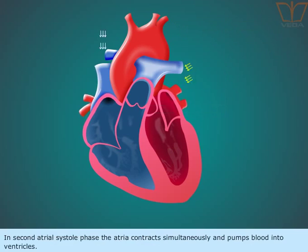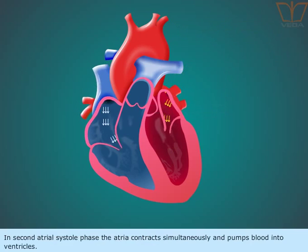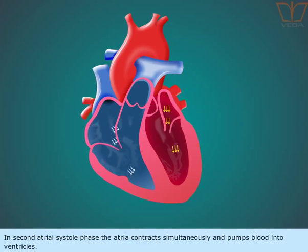In the second atrial systole phase, the atria contracts simultaneously and pumps blood into the ventricles.